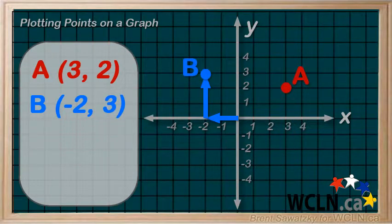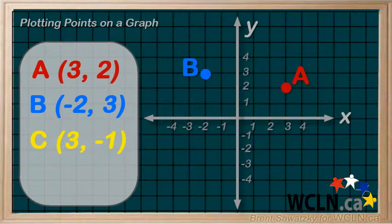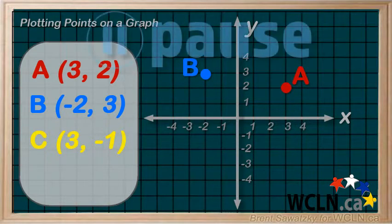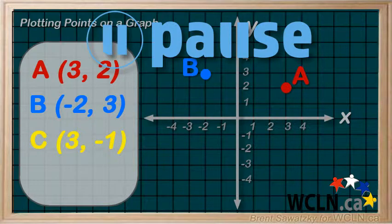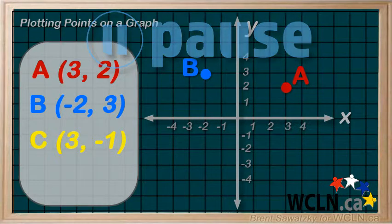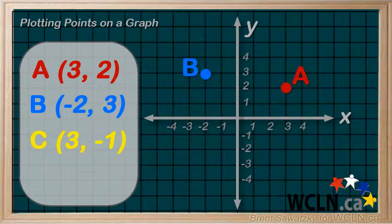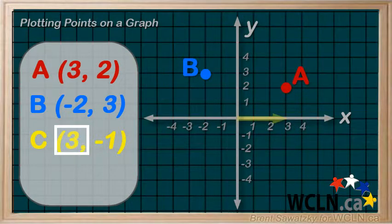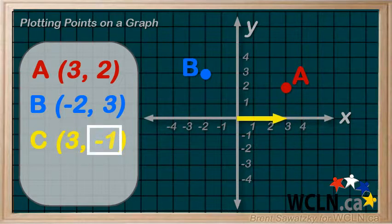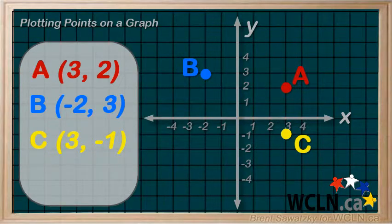See if you can figure out where point C belongs. It has coordinates 3 and negative 1. Pause the video right now and give it a try. Okay, let's see how you did. The x value is positive 3, so 3 to the right, and the y value is negative 1. And that means we're going downward. And we end up right here. This is our point C. Did you get it right?